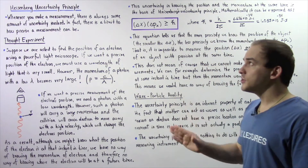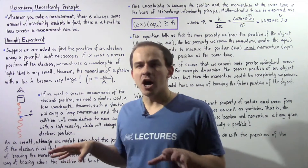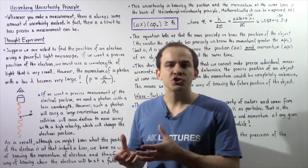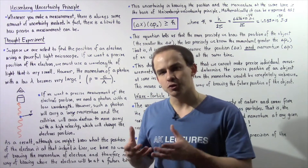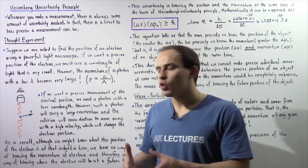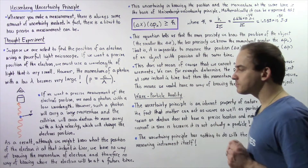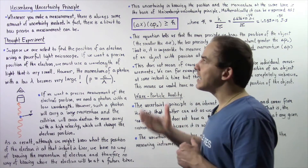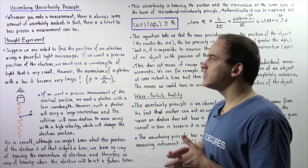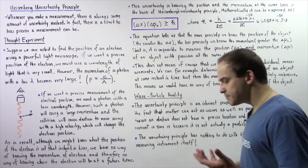The Heisenberg Uncertainty Principle has absolutely nothing to do with the actual device or instrument that we use to make those measurements. To fully understand what the Uncertainty Principle is, let's conduct the following thought experiment.